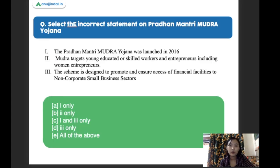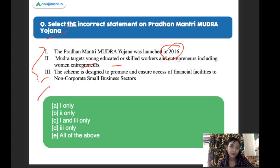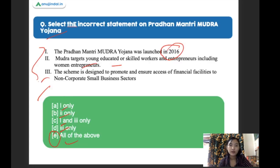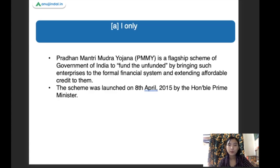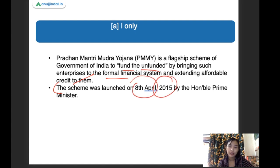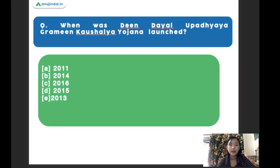Select the incorrect statement on Pradhan Mantri Mudra Yojana. Statement one: it was launched in the year 2016. Statement two: Mudra targets young educated or skilled workers and entrepreneurs including women entrepreneurs. Statement three: the scheme is designed to promote access to financial facilities to non-corporate small business sectors. The right answer is one only, as statement one is wrong. This scheme was actually launched on 8th April 2015 by the Prime Minister of India. It is a flagship scheme to fund the unfunded by bringing enterprises into the formal financial system.